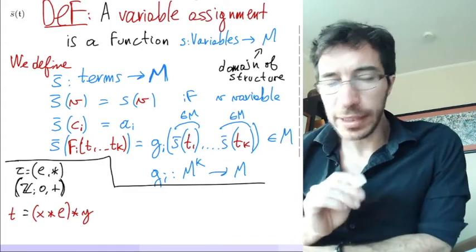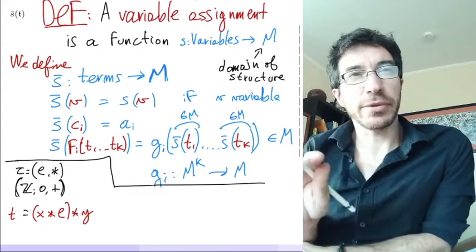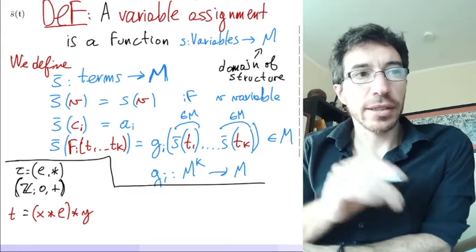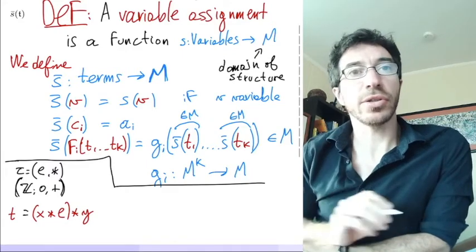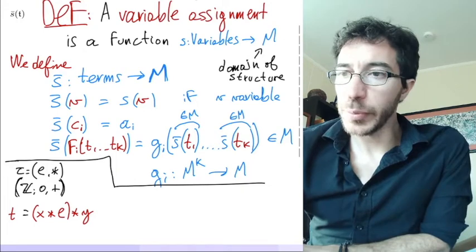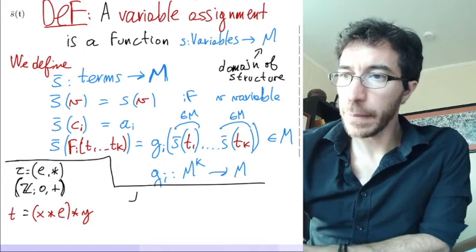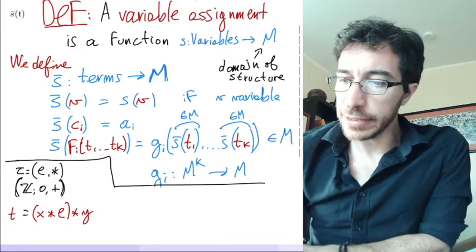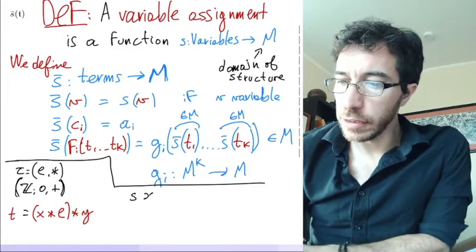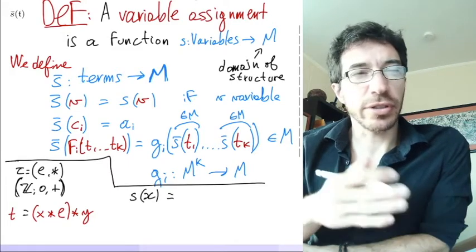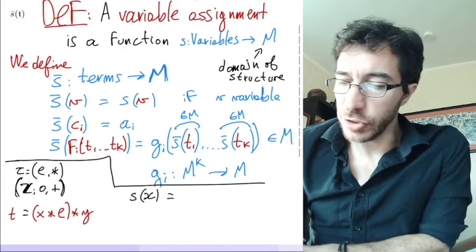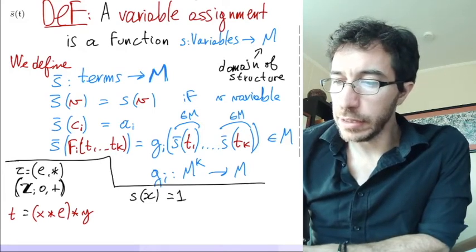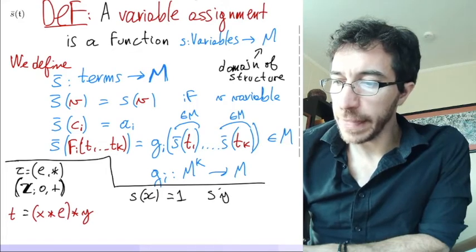Okay, so that's our term. I'm going to use red again for the symbols. The equal there is not a symbol. I'm just saying that both terms are the same thing. The symbols here are parentheses x star e parentheses star y, those are the symbols. And now let's suppose that we are given a variable assignment. A variable assignment on x has to give us an element of the structure. The structure here is Z.